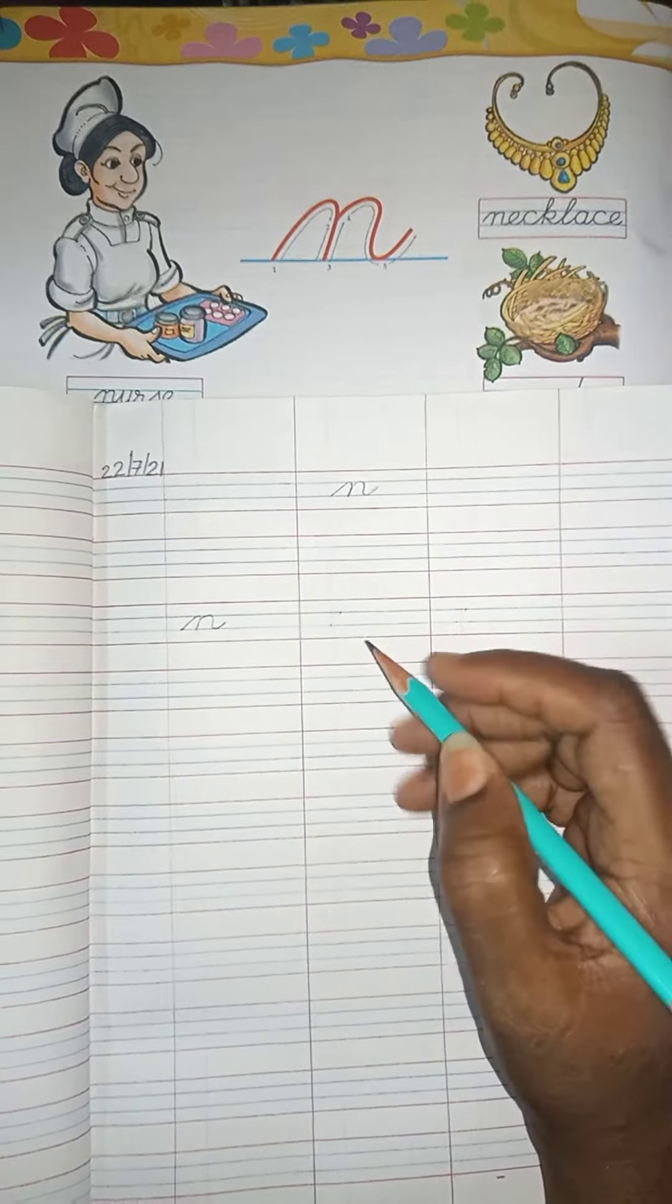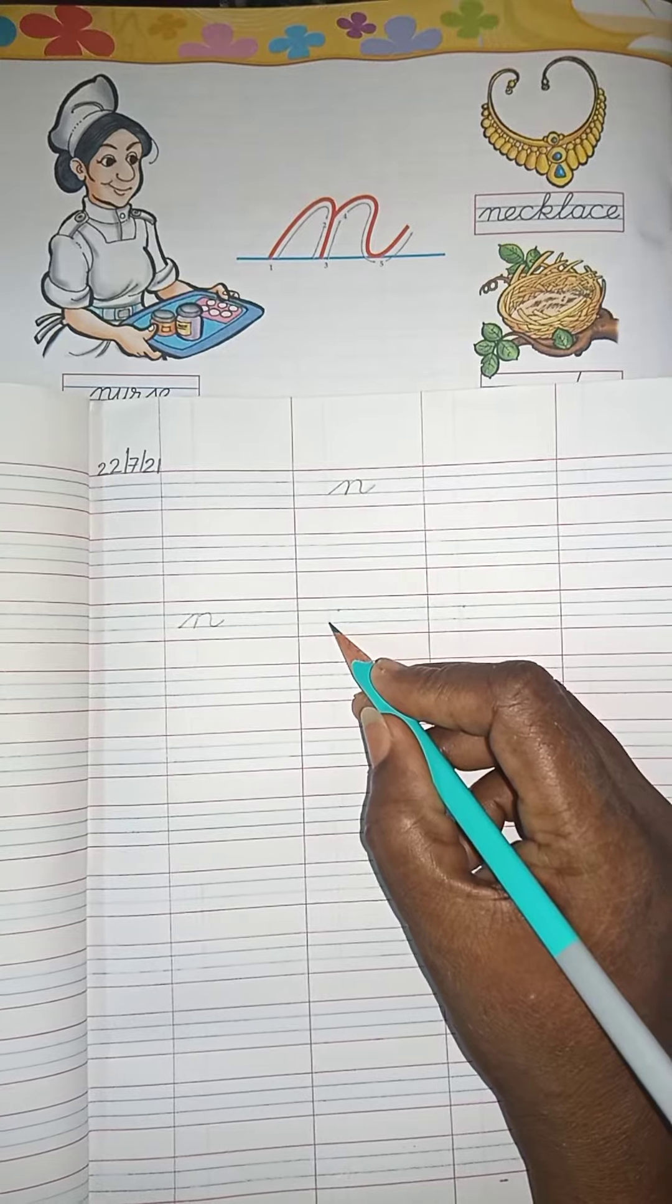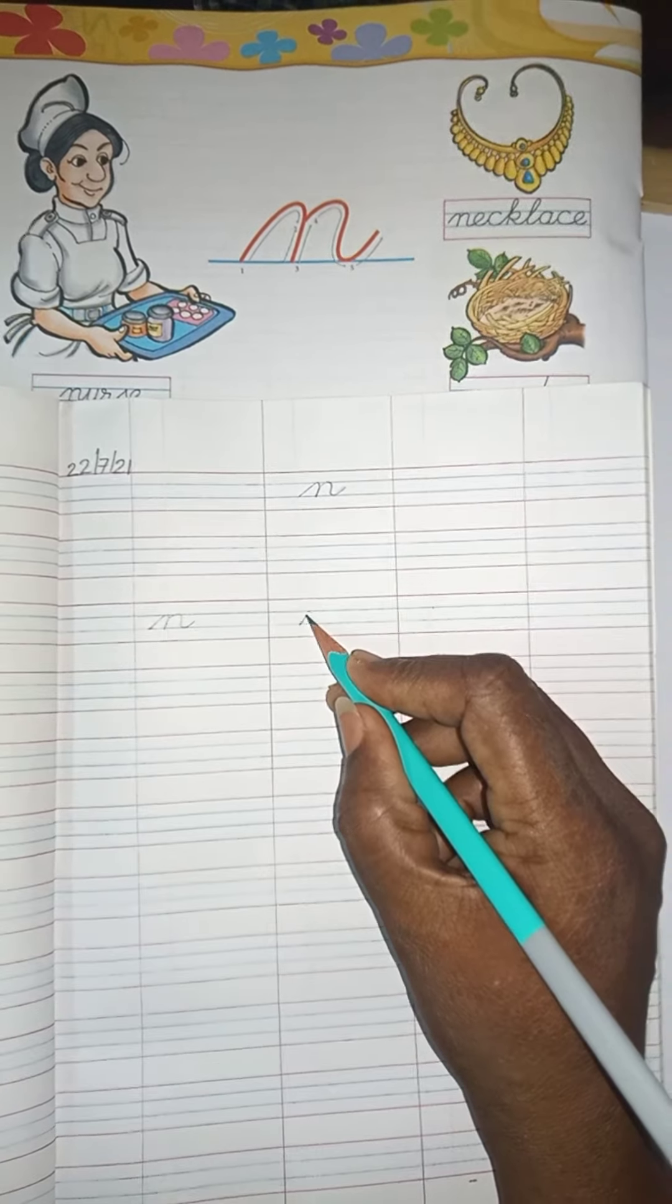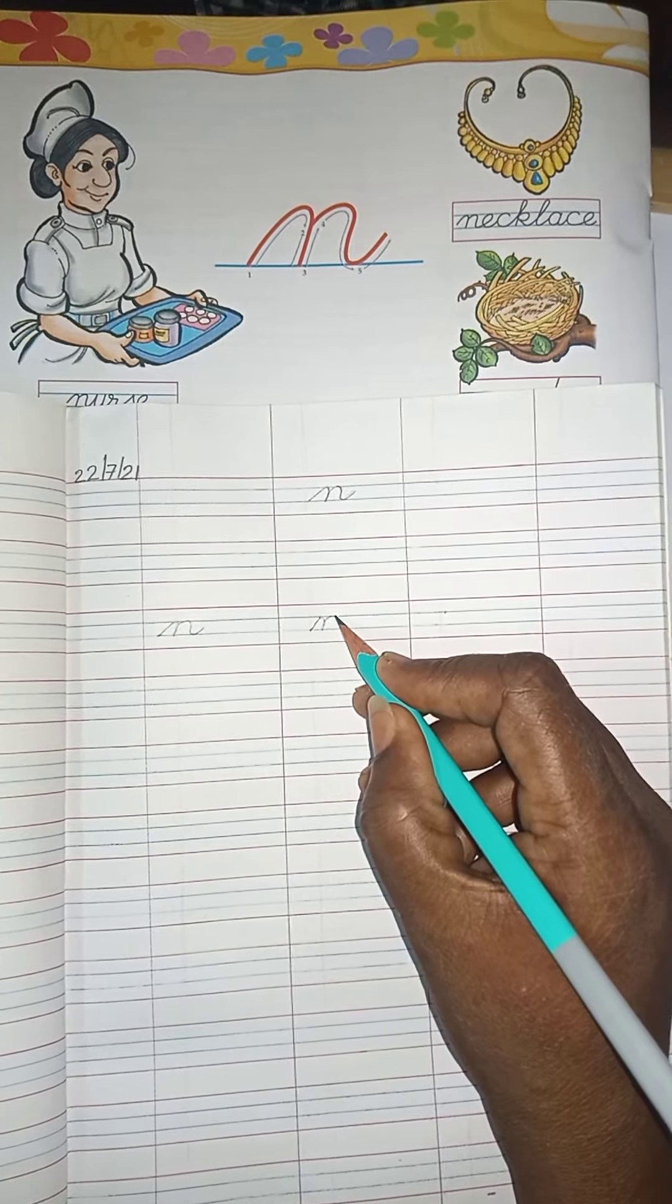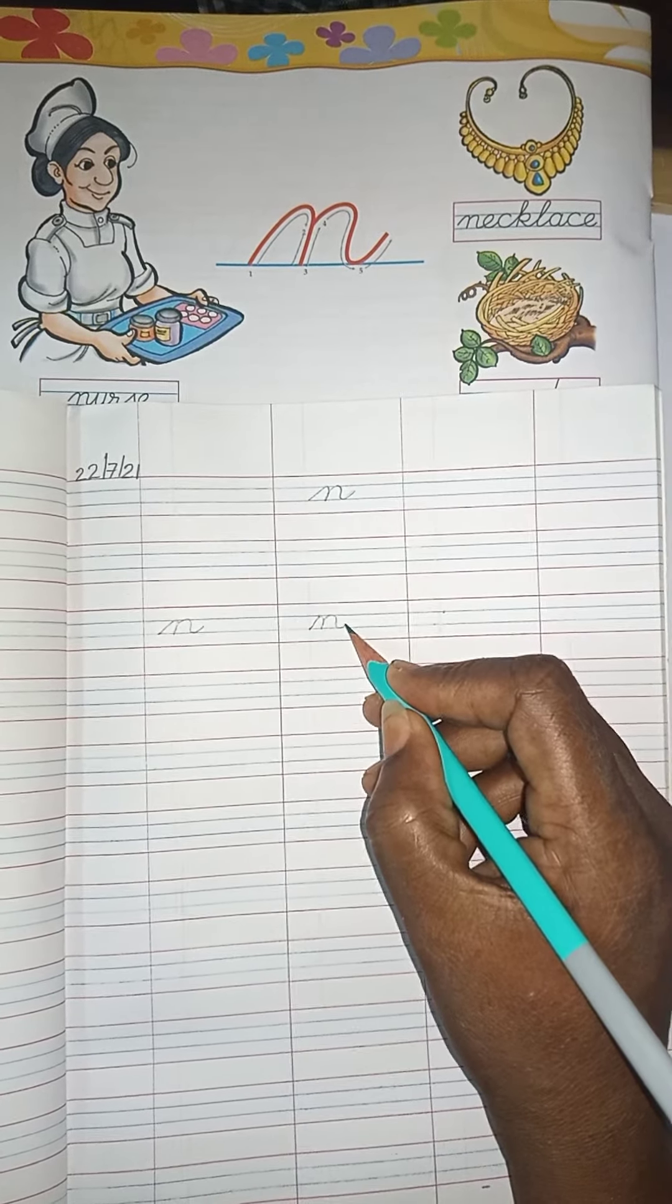N for nest. Once again. Put your pencil on the below blue line, then take it up, then come down, again go up, then make a small curve.